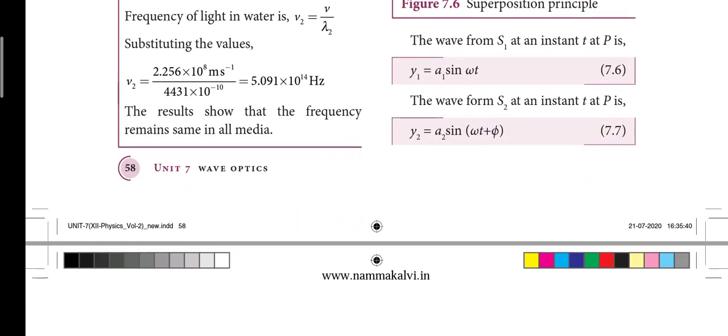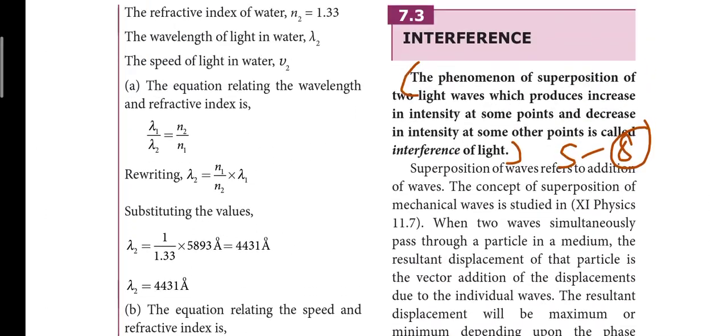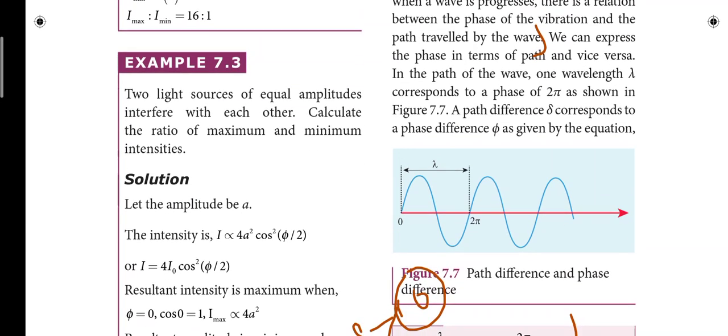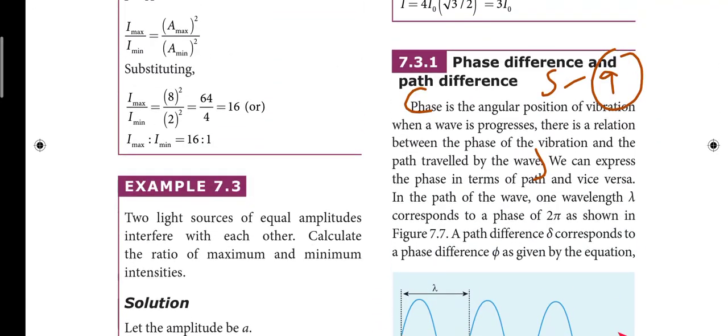Next, page number 58: interference — that is five lines. So on the fourth short answer. Next, page number 60: phase is the angular vibration. So on the first two or nine lines — the angular position of vibration. When a wave progresses, there is a relation between the phase of the vibration and the path traveled by the wave. So on four lines — that is the ninth short answer.